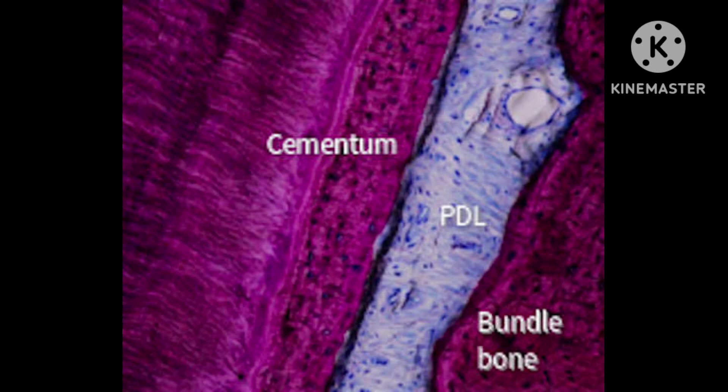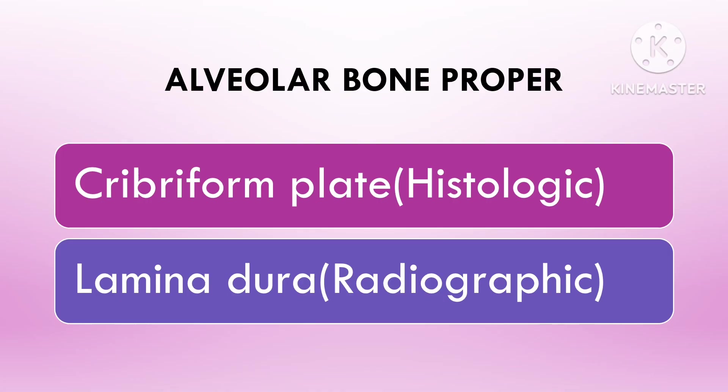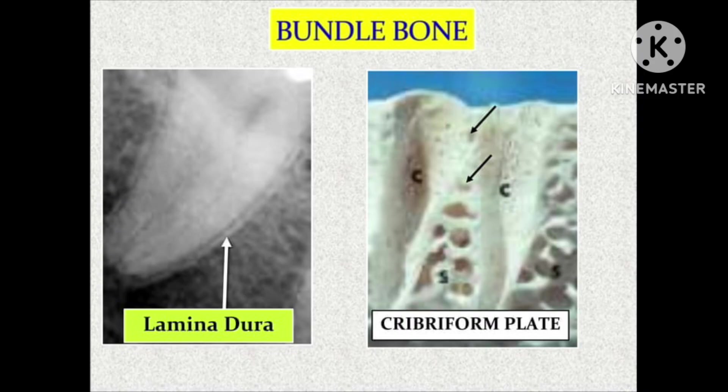Bundle bone plays a crucial role in the direct attachment of the tooth within the alveolar bone proper. The cribriform plate refers to the perforated area of bundle bone that contains tiny openings for blood vessels and nerve endings, giving it a cribriform appearance under the microscope. This is where Sharpey's fibers insert, helping to anchor the periodontal ligament fibers to the bone.